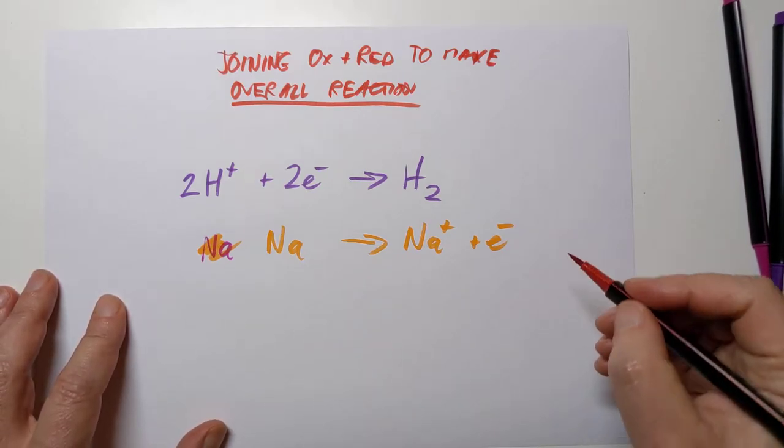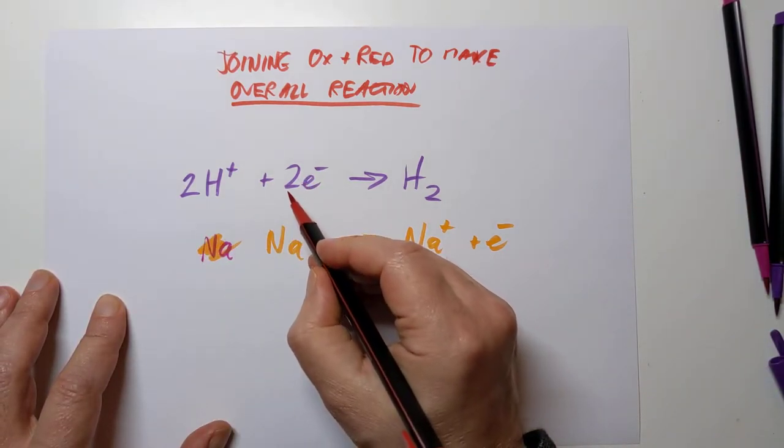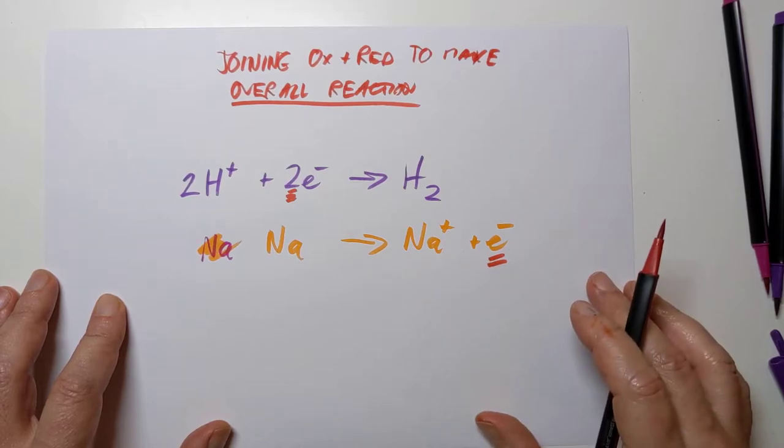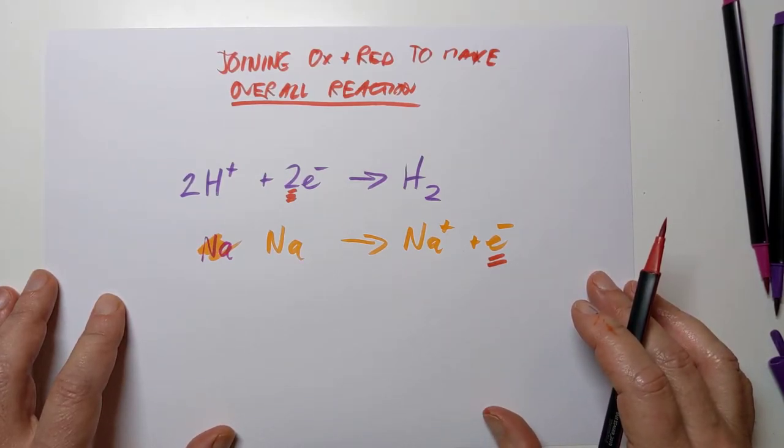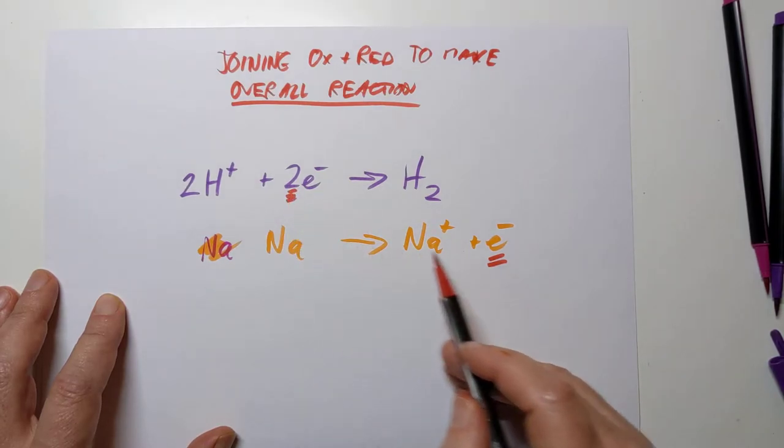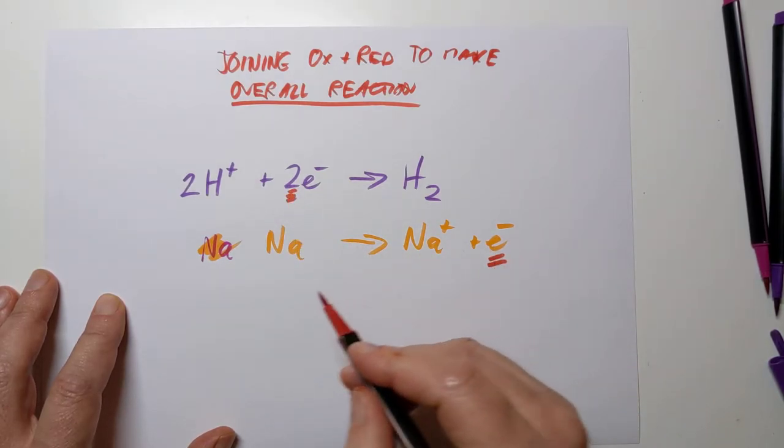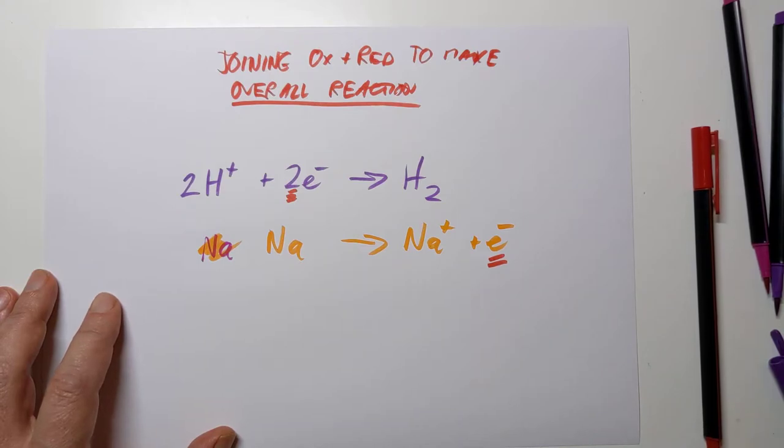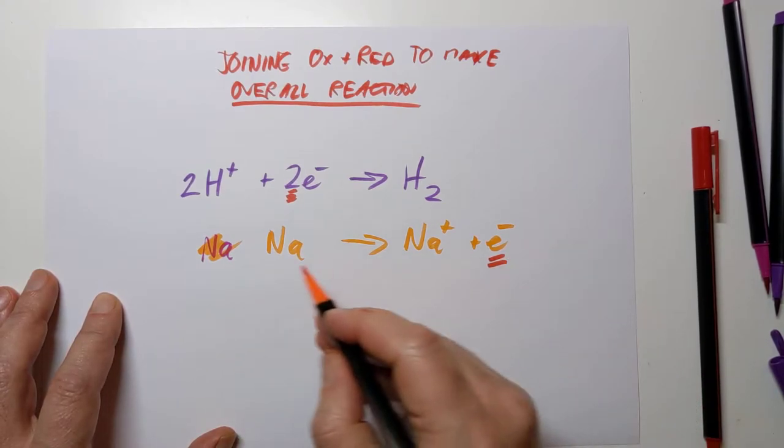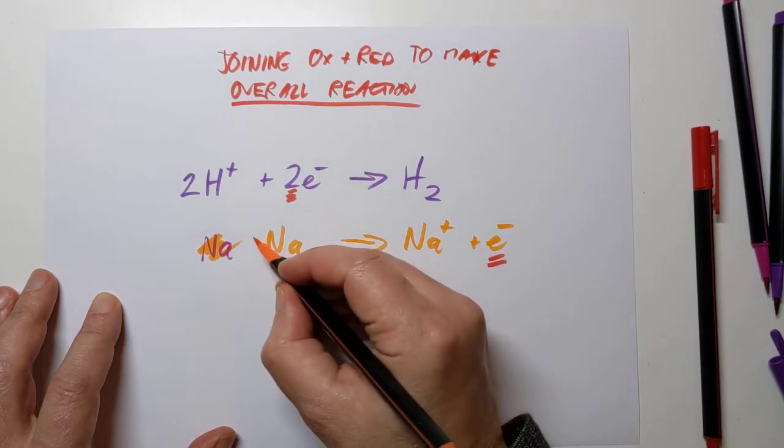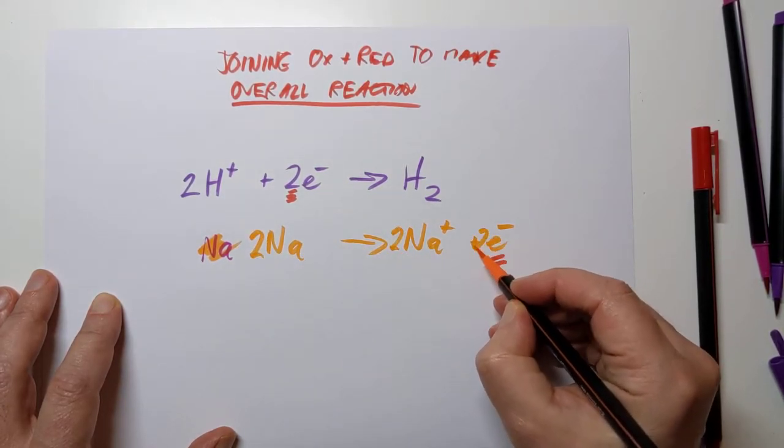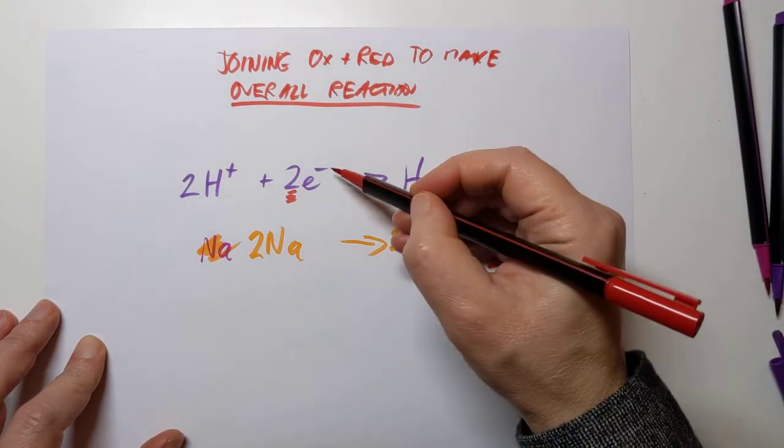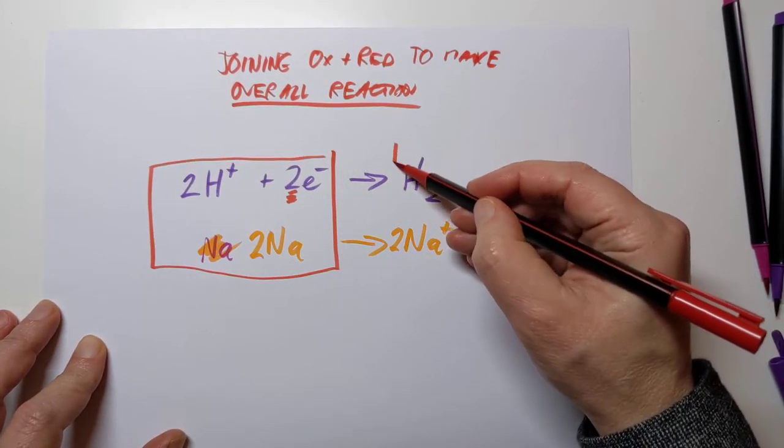Now, the clue, the rule here is you have to have the same number of electrons being gained as being lost. And I'm hoping at this point you can see that is not true. So we can't squash these together until that is the case. We're gaining two electrons here, but we're only losing one. So we need to fix that situation. The easiest way to fix that situation would be to multiply this entire equation here by two. Let's multiply everything by two, and that will give us our two electrons. So let's multiply all the little terms by two. Now, two being lost, two being gained.